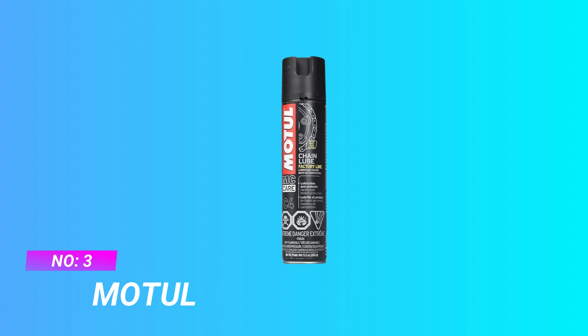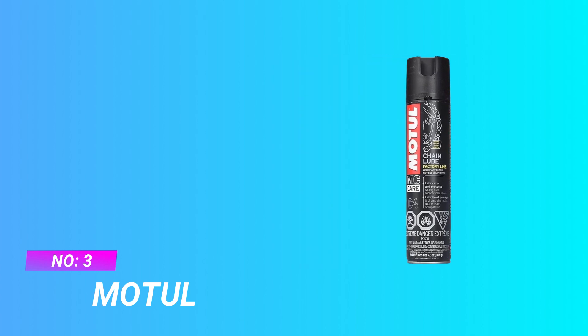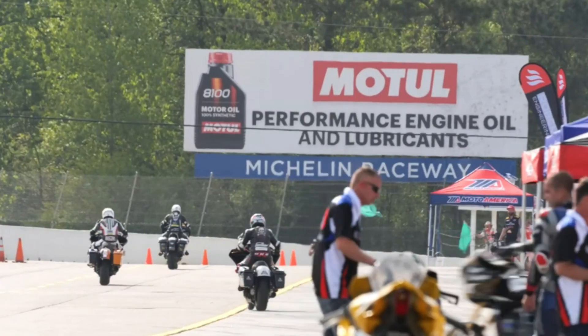Number 3: Motil Chain Lube Spray. Once your chain has dried, apply Motil C2 Chain Lube, Road.